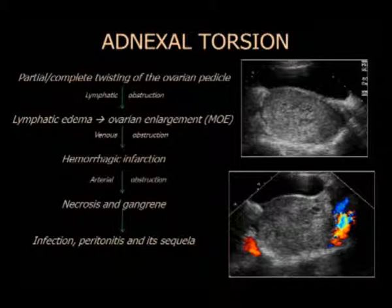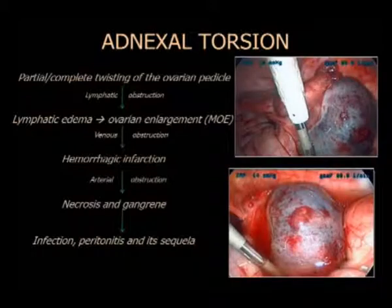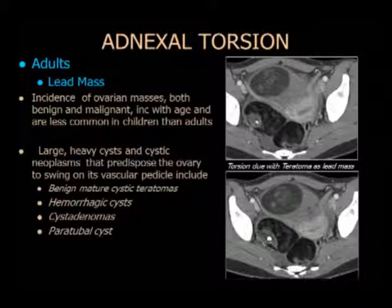El aspecto de tormenta de nieve es la imagen que se usa. El flujo estaría obstruido, lo que se traduce en infarto hemorrágico; si no remite, puede convertirse en obstrucción arterial, necrosis y peritonitis franca. Lo primero que desaparece es el flujo venoso, antes que el arterial. En adultas primero se detecta una masa — las molligas son lesiones benignas, los teratomas en forma clásica, quistes hemorrágicos y endometriomas — que pueden dar lugar a torsiones anexiales.